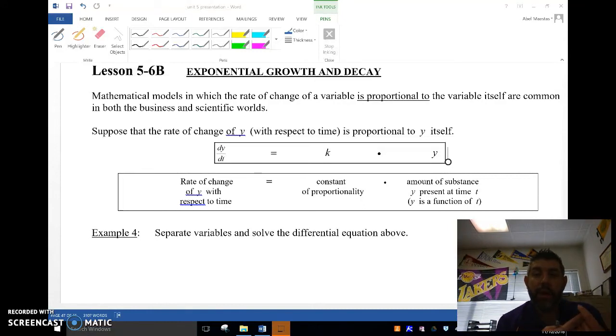Okay, so exponential growth and decay is a mathematical model for the rate of change when the rate of a variable is proportional to the variable, and we use this a lot in science, biology, and business. It's basically the rate at which something grows proportional to the amount of substance.